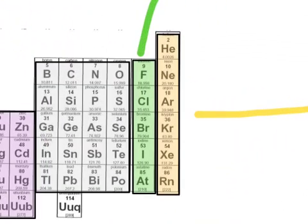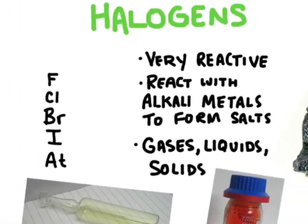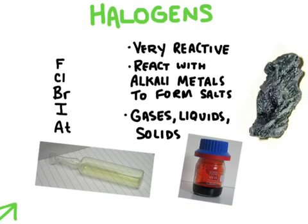Here's our next group — the halogen group here in green. The halogens are very reactive; they're actually the most reactive elements on the periodic table, and fluorine is the most reactive element of all. They're generally going to react with alkali metals to form salts, but they'll pretty much react with any other metal. They can be gases, liquids, and solids. Here's an example of chlorine, bromine, and iodine. As you move from top to bottom on the halogens, things become more solid — fluorine and chlorine are gases, bromine is a liquid, and as we move down they turn into solids.